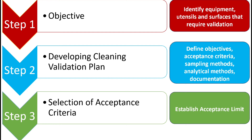Let us see the various steps involved in cleaning validation. The first step is to identify the objective of cleaning validation — what are we supposed to clean and why. For example, identify equipment, utensils, and surfaces that require validation. It is mainly done to minimize cross-contamination, determine the efficiency of the cleaning process, do troubleshooting in case a problem is identified, and to give suggestions to improve the process.